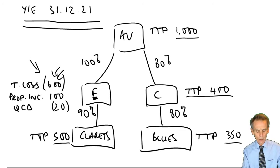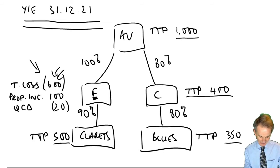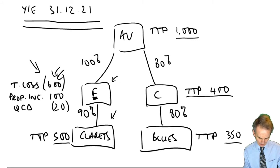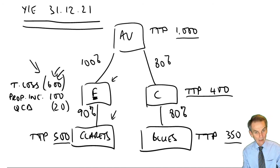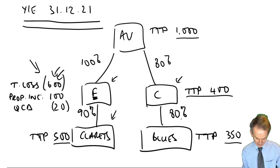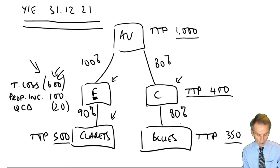Working from the top, the principal parent company AV is related firstly to Company F, its 100% wholly owned subsidiary. The effective holding down to Clarets — the sub-subsidiary, an indirect sub — is 100% of 90%, which exceeds 50%. So AV is also related to Clarets as well as F. Clearly looking down the other side to Company C: AV owns 80%, so those two companies are related. Then 80% of 80% down to Blues gives an effective 64%, which again exceeds 50%. So we have five related 51% group companies.